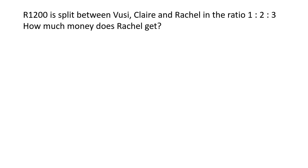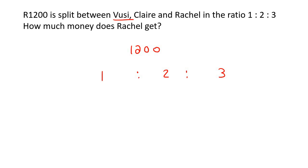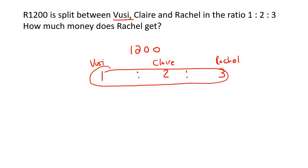Let's go to our first example. One thousand two hundred Rand is going to be split between Vusi, Claire and Rachel in the ratio of one to two to three. How much money does Rachel get? So we've got 1,200 Rand split in the ratio of one to two to three. Remember, the order of the names matches these numbers — so Vusi goes with one, Claire with two, and Rachel with three. What you need to do is add up all of these parts: one plus two is three, three plus three is six. So there are six parts.